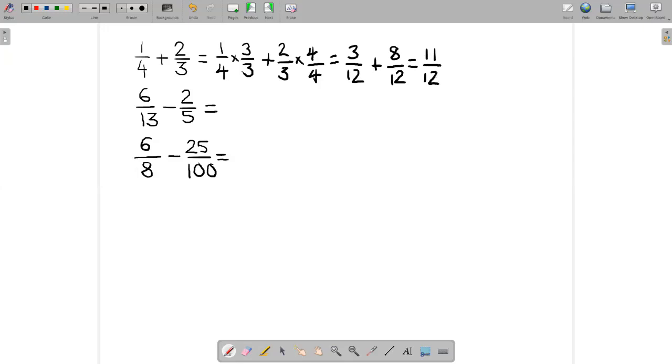Same kind of idea if we're subtracting fractions. Six over 13 minus two fifths. The least common multiple of 13 and five is 65.